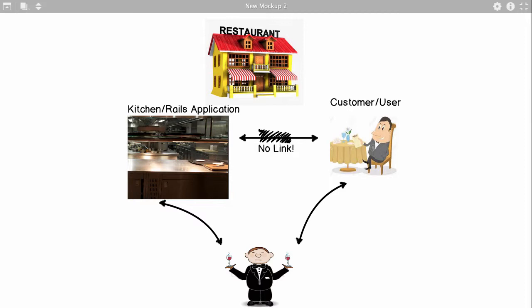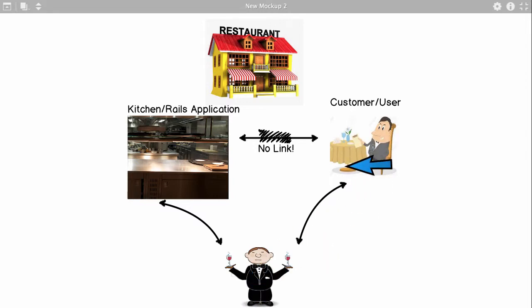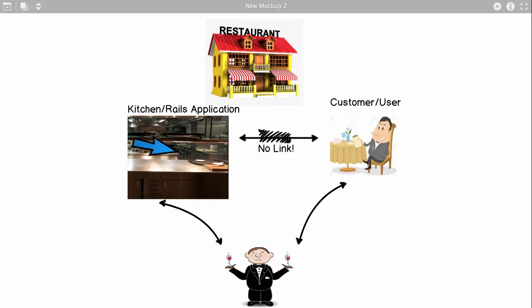That's the server, and for web applications this is the web server. The menu — which represents what your Rails application provides — for Facebook would have friends, messages, likes, sharing, photos, feed, and more. LinkedIn's menu would have connecting to peers, posting resumes, contacts, publications, and so on. For that menu to work — for you to use the features of the web application — you need the server and the kitchen, which is the application.